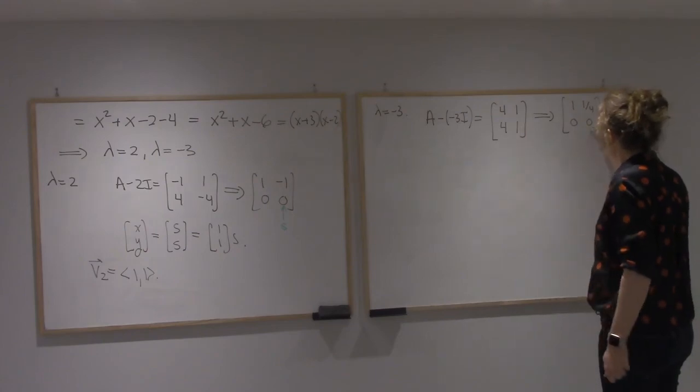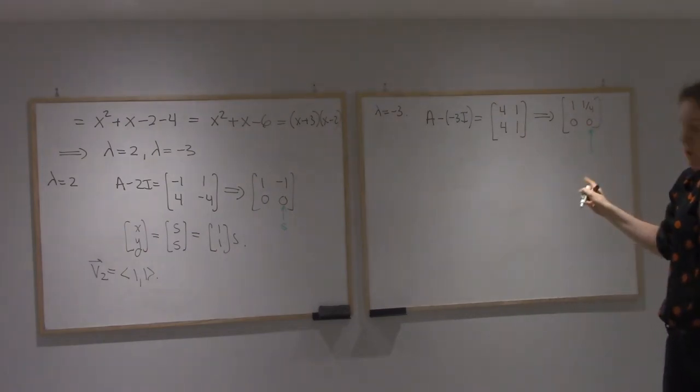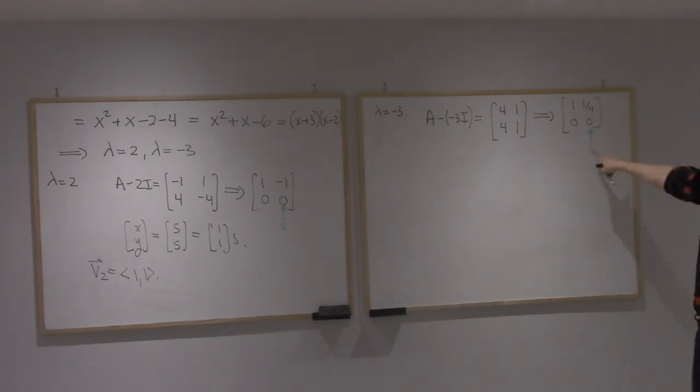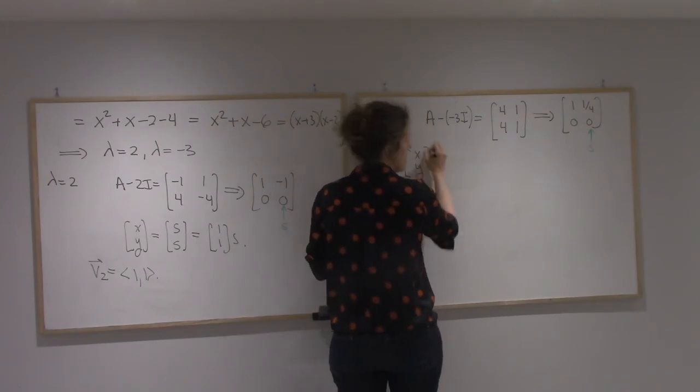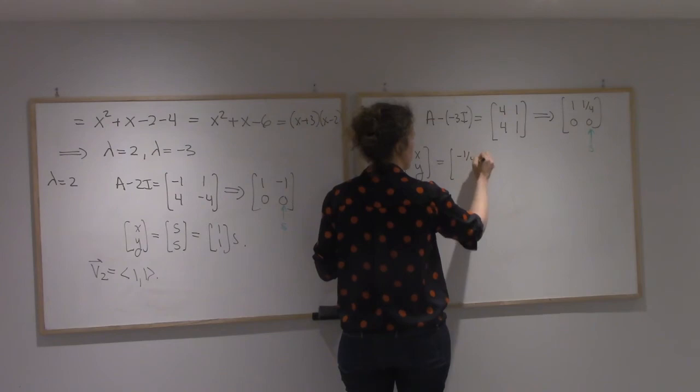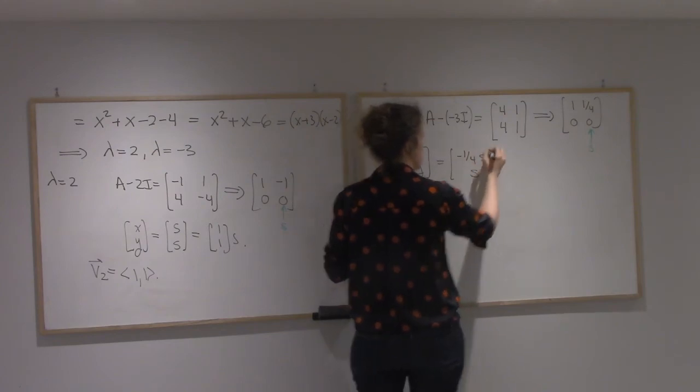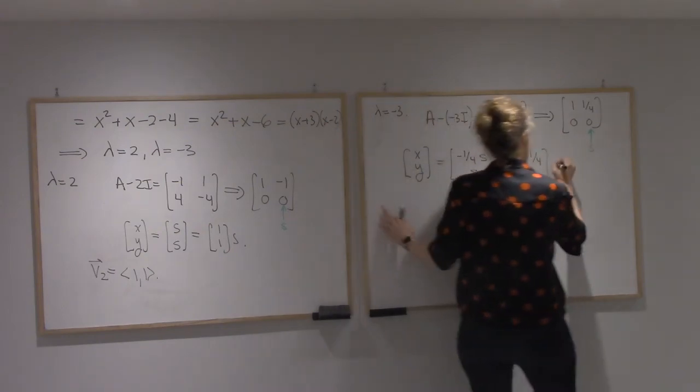Again, I should always have at least one free variable. In this case, the second one is free. So I'll have x, y equal to -1/4 s and s. So I get (-1/4, 1) times s.